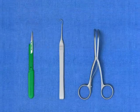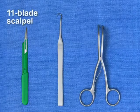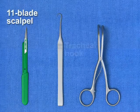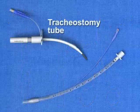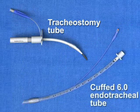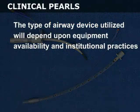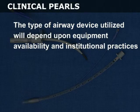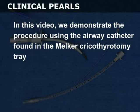The required equipment for a traditional surgical cricothyroidotomy includes an 11-blade scalpel, a tracheal hook, a trousseau dilator, and a tracheostomy tube or cuffed 6.0 endotracheal tube. The type of airway device utilized will depend on equipment availability and institutional practices. In this video, we demonstrate the procedure using the airway catheter found in the Melker cricothyroidotomy tray.